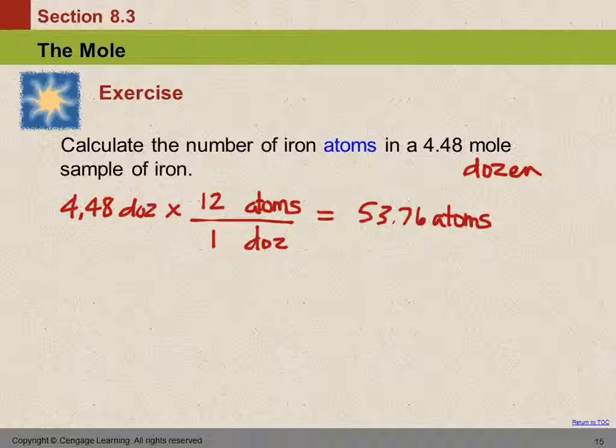So 4.48 dozen times 12 tells us 53.76 atoms. Now you can't have a fraction of an atom. But you can't have 4.48 dozen atoms either. But that's just an example. So let's do the real problem now.